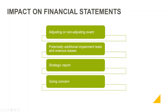Another area which could potentially be impacted is the strategic report, which is relevant for both December and March year-ends. The strategic report is required to disclose principal risks and uncertainties, and for some businesses that have been significantly impacted, coronavirus could be one of these principal risks which needs to be disclosed. You need to carefully consider what disclosure is required.